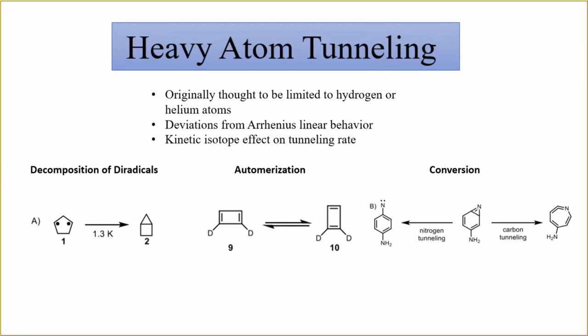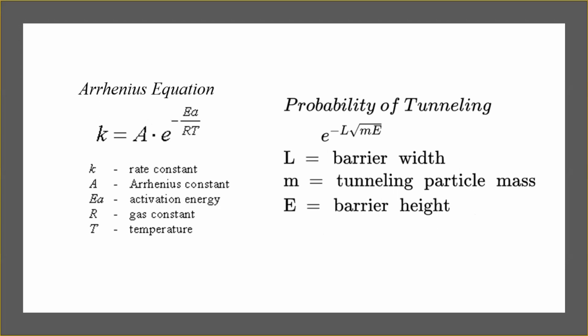This phenomenon has been supported by the kinetic isotope effect, with it having a direct influence on the tunneling rate on these types of reactions that have occurred and have been observed to undergo quantum tunneling processes, such as decomposition, automerization, and conversion reactions. From these reactions, it has been observed that the linear behavior developed from the Arrhenius equation has had certain deviations which contradicts the classical thought,